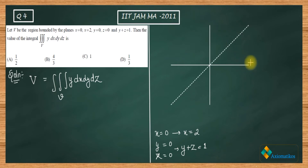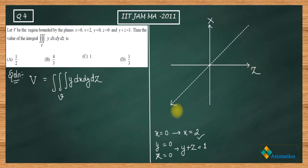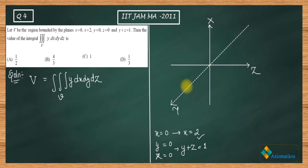Okay, so here is our three-dimensional system. I am representing this axis as the x-axis, this axis as the z-axis, and this axis as the y-axis. These are only the positive axes. The negative z-axis is over here, negative x-axis is over here, and negative y-axis is over here. So this octant we have is actually the positive octant, in which x, y, and z are all greater than zero.